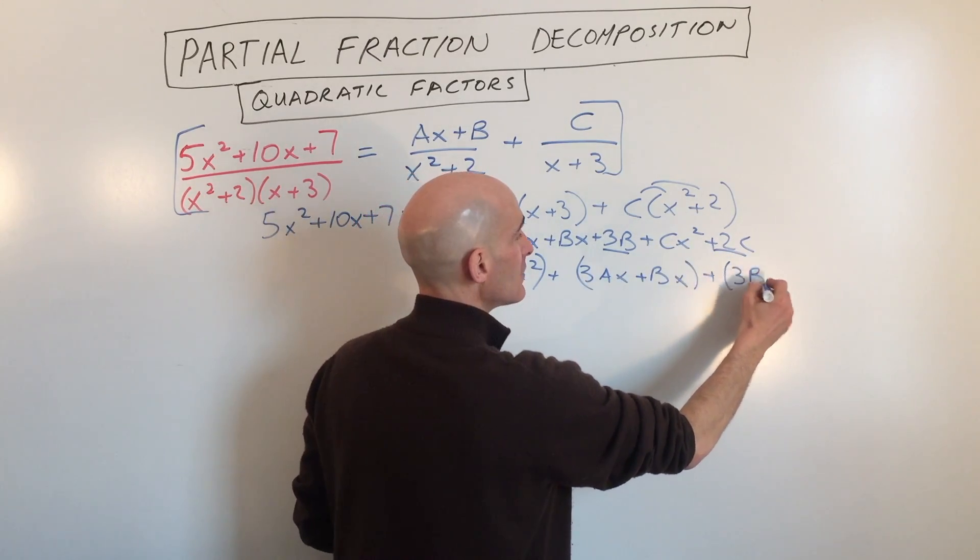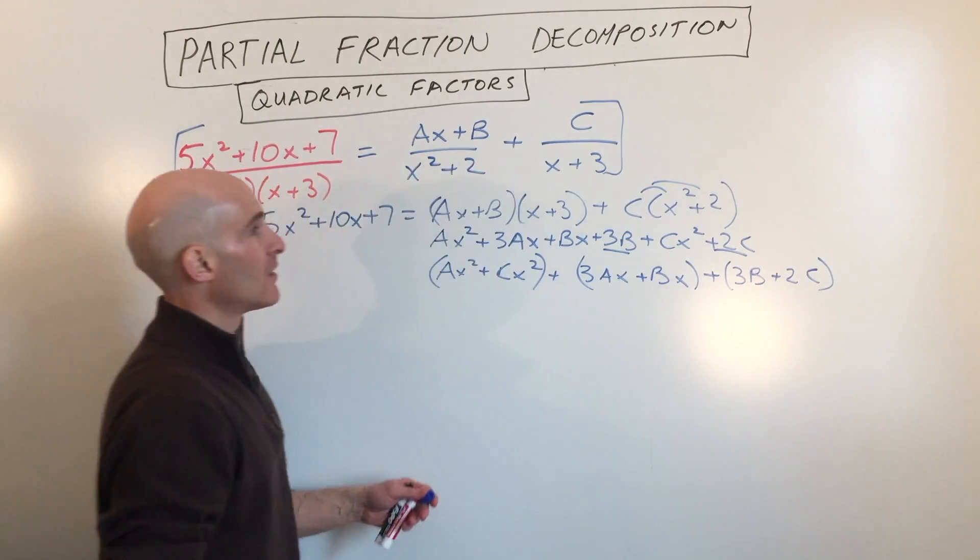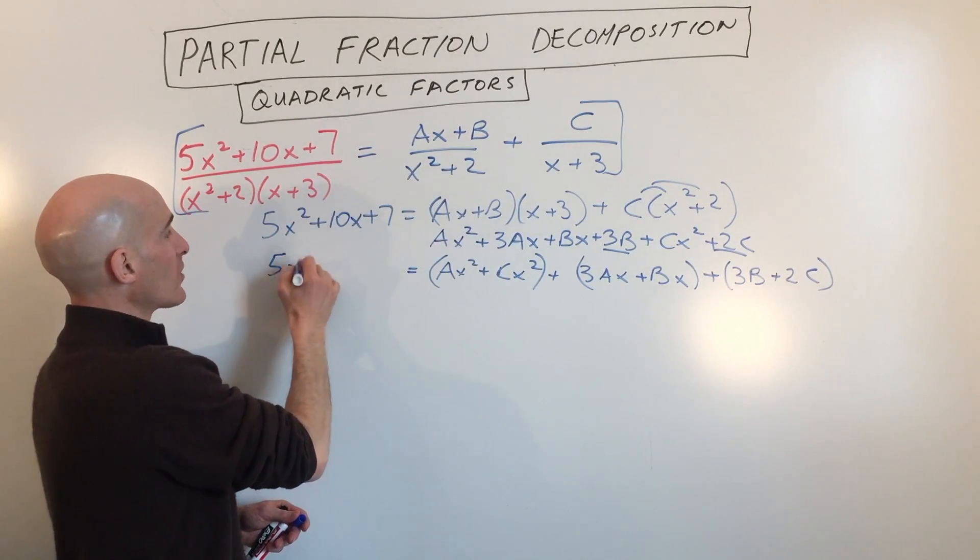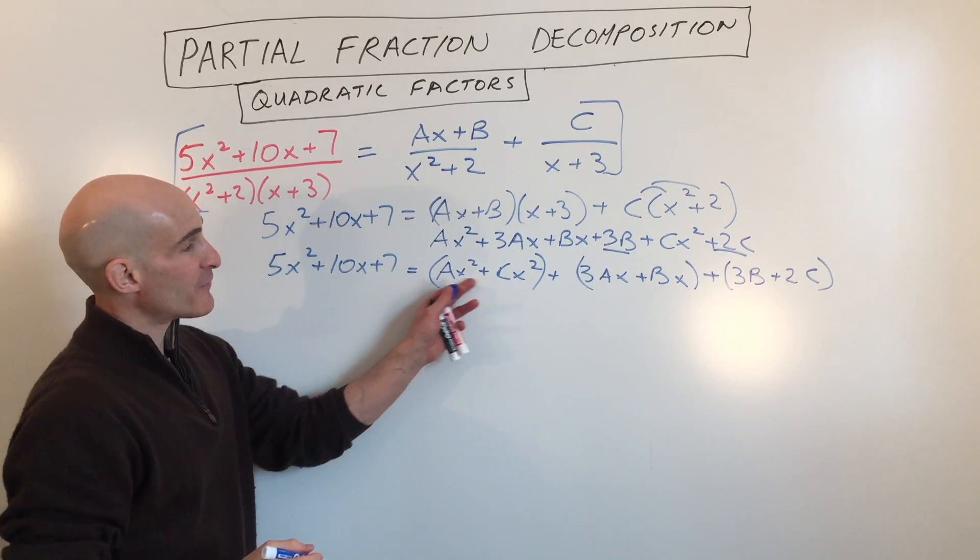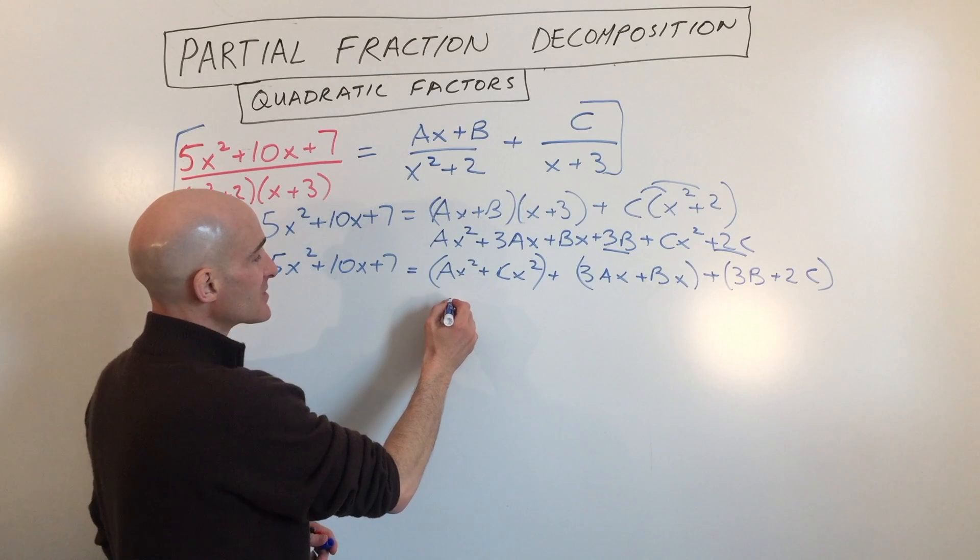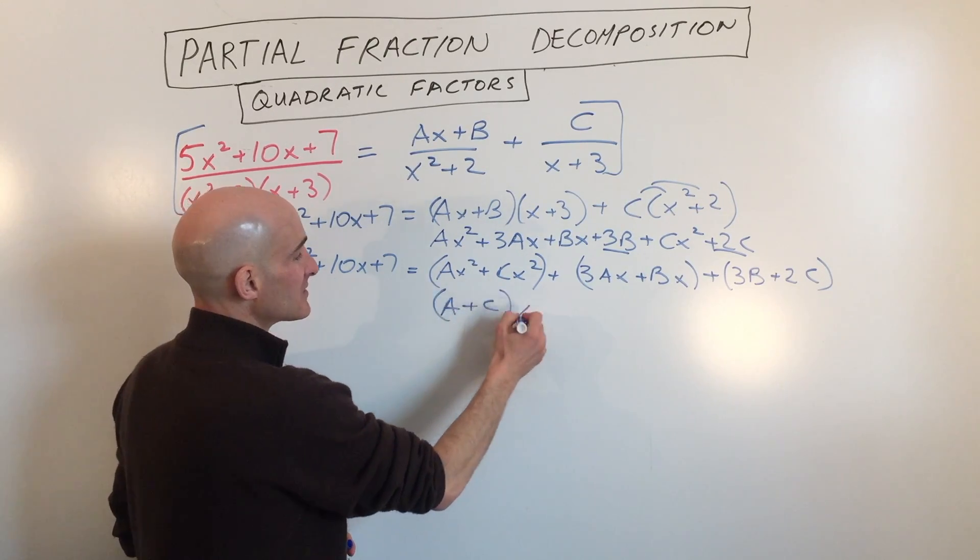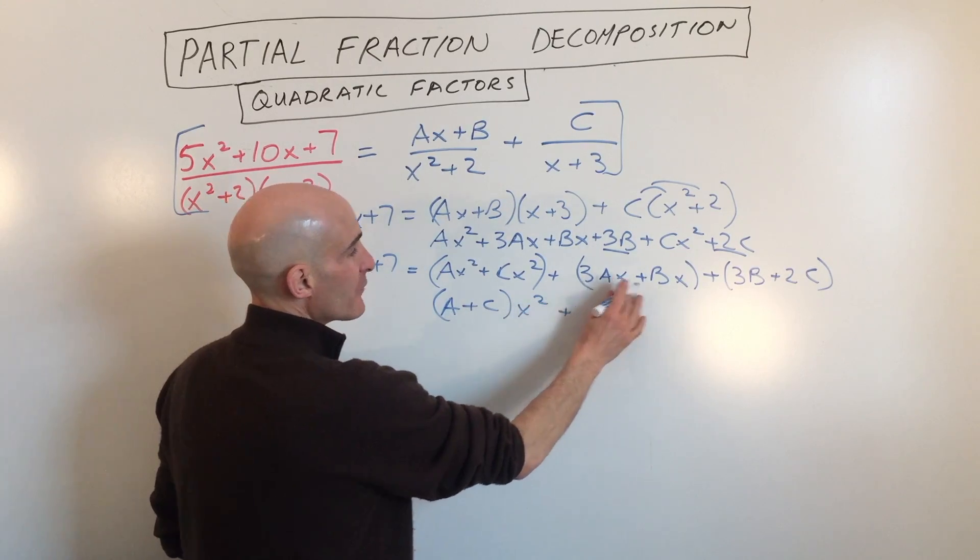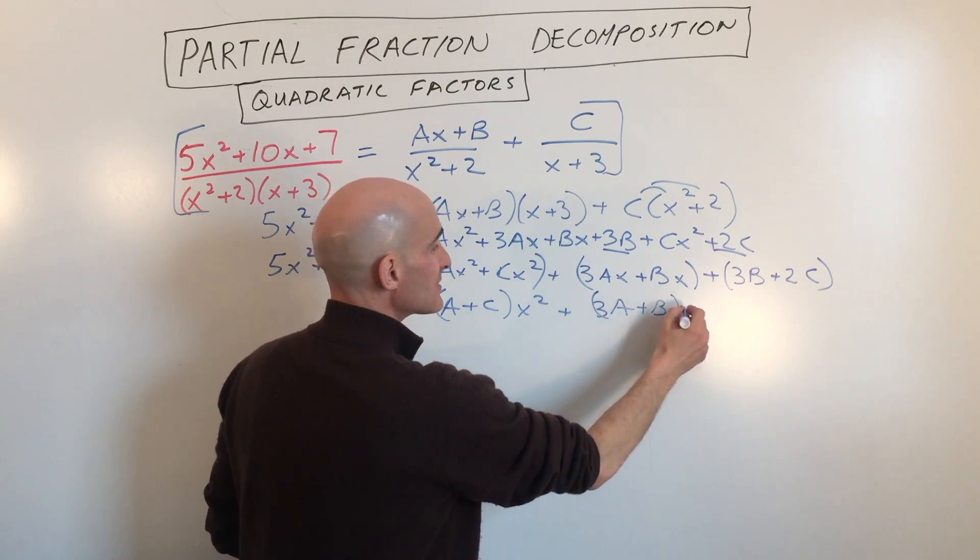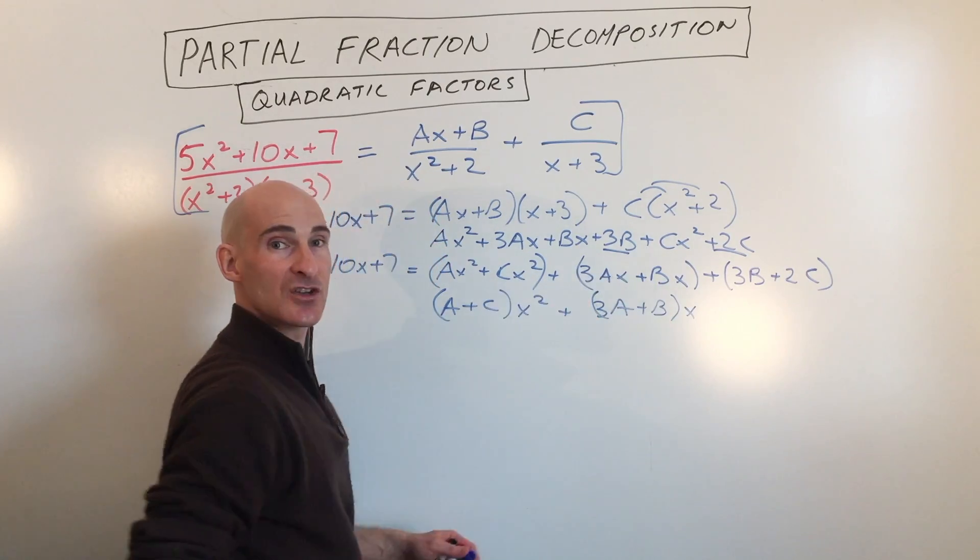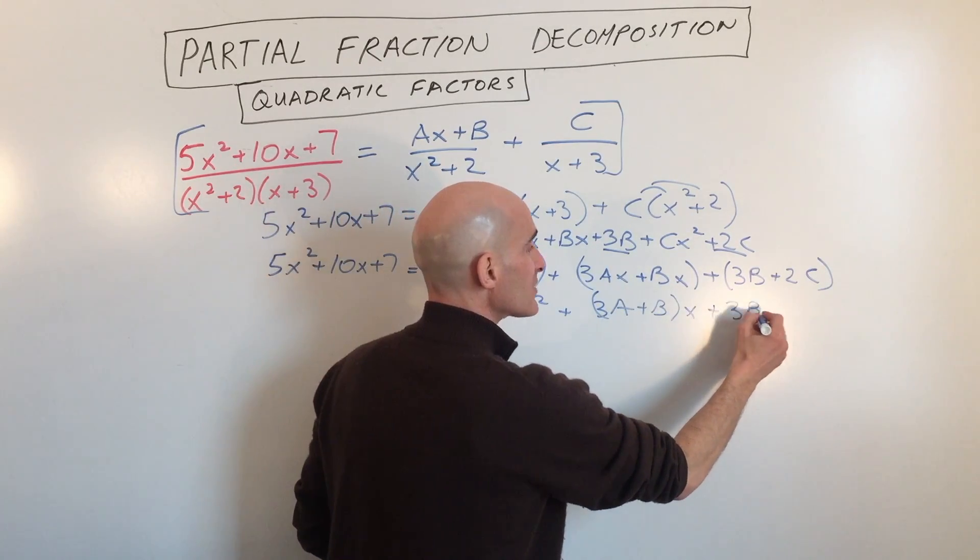And I'm going to group the constant terms together now which those are just going to be 3b and 2c. So that's 3b plus 2c. And that equals 5x squared plus 10x plus 7. Now what I'm going to do here is I'm going to factor out the x squared. So that's going to be a plus c times x squared. Here I'm going to factor out the x. So that's going to leave us with 3a plus b times x. If you distribute the x back in you get back the original here. And here I'm just going to leave this as 3b plus 2c.